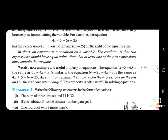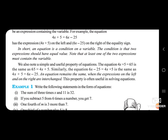We also note a simple and useful property of equations. The equation 4X plus 5 is equal to 65 is the same as 65 is equal to 4X plus 5. The equation remains the same when the expressions on the left and on the right are interchanged. This property is useful in solving equations.